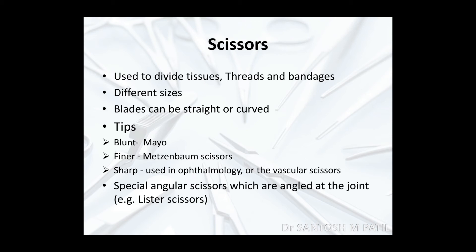After BP handles and blades, the next cutting instruments are scissors. Scissors are used to divide tissues, suture materials and bandages. There are different types — small scissors for pediatric use, medium size for adult surgeries, and long scissors for major laparotomy or pelvic surgeries. The blades can be straight or curved. Depending on the tip, they may be blunt — the best example being Mayo scissors — or fine like Metzenbaum scissors.